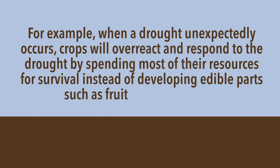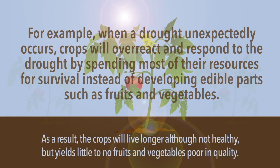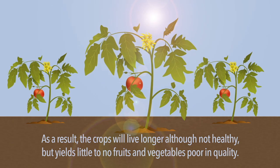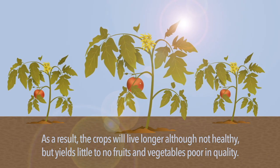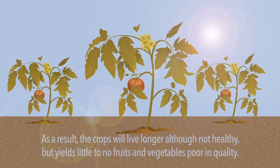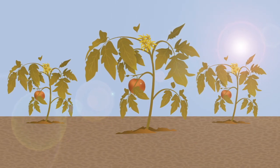For example, when a drought occurs the crops can overreact because they can't predict the weather and therefore respond by investing their resources in survival instead of in the edible parts of plants and vegetables. As a result the yields would be lower than if there was actually a controlled response.